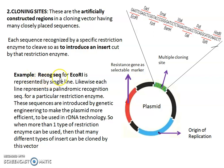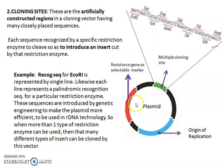Each sequence recognized by a specific restriction enzyme can be used to cleave the vector so that you can introduce an insert cut by that same restriction enzyme. When more than one type of restriction enzyme recognition sequence is present, more than one restriction enzyme can be used, and you can use it for different recombinant technology applications.